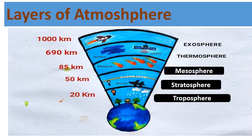The third layer is the Mesosphere. Meteorites, or small rocks moving in space, burn up in this layer and therefore do not reach the surface of the Earth.